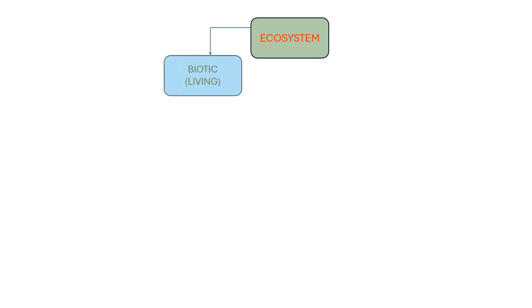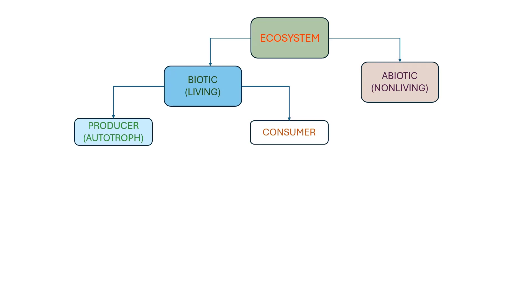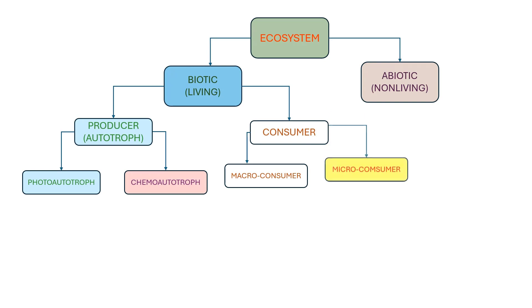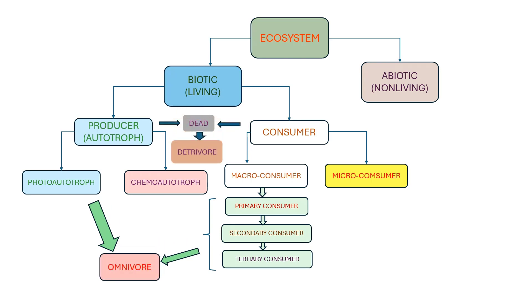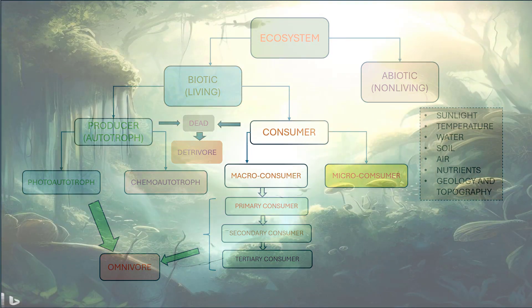Biotic or living, and abiotic or non-living. Biotic components have two subcomponents: the producer or autotroph, which may be photoautotroph or chemoautotroph. The two types of consumers are macro-consumer and micro-consumer. Macro-consumers are classified into primary, secondary, and tertiary consumers and omnivores. The dead organic matter is the food for the detritivores. The abiotic factors are sunlight, temperature, water, air, nutrients, geology, and topology. All these components constitute the functional unit of an ecosystem.